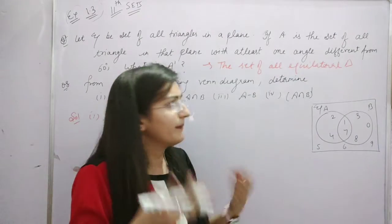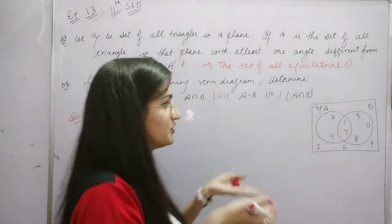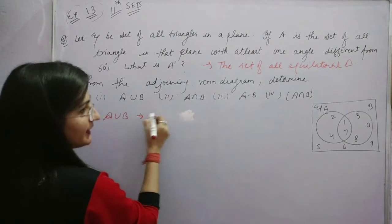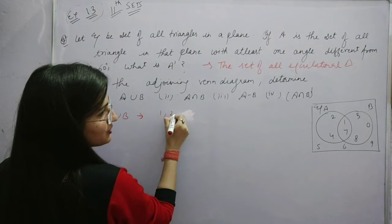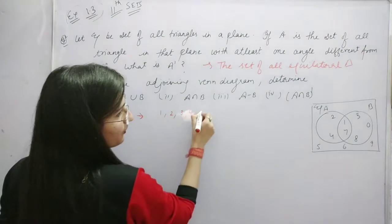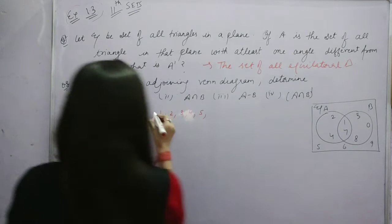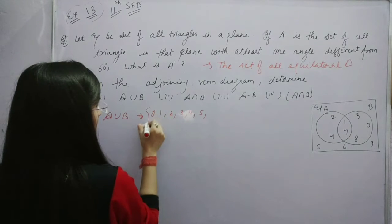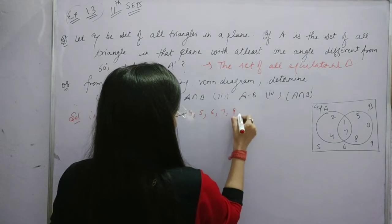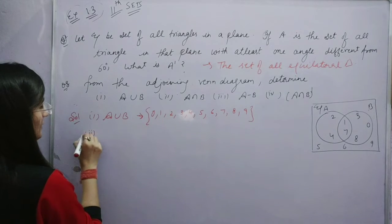A union B means all the numbers in set A and set B. So all elements: 1, 2, 3, 4, 5 — and adding 0 as well — 6, 7, 8, 9. That is the union. Now how will we take the intersection?